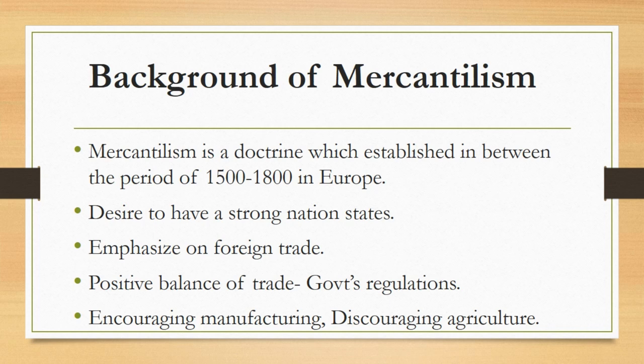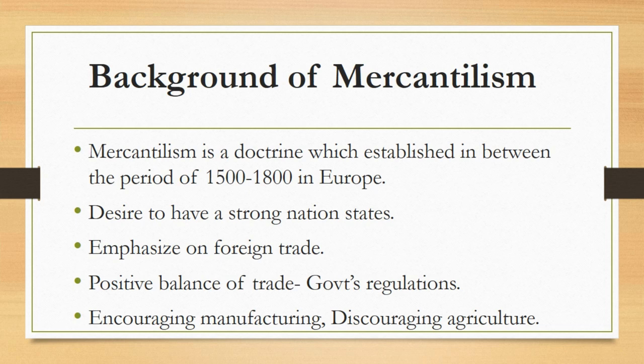Even in foreign trade, a country can get more silver and gold only if there is a positive balance of trade — meaning exports should be more than imports. By foreign trade we don't mean direct trade of gold and silver; the trade may be of anything. Since the world's economy was gold and silver centric, trade of goods among nation states always attributed to the value of gold and silver. A positive balance of trade can only be achieved through government regulations — the government should regulate trade through its policies to increase exports and decrease imports.